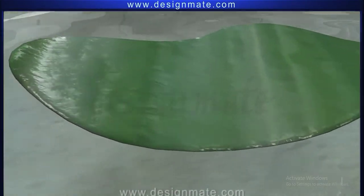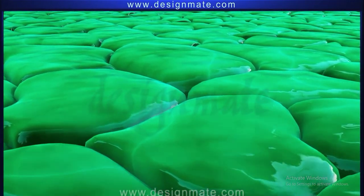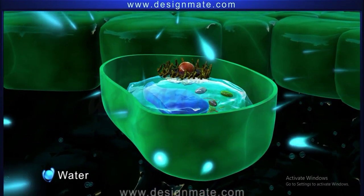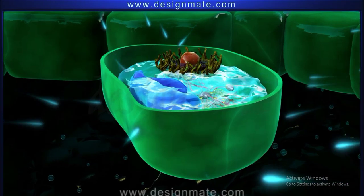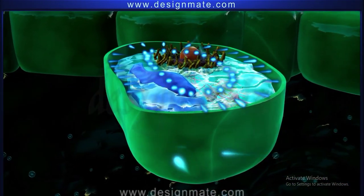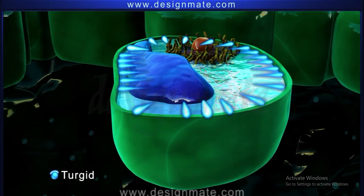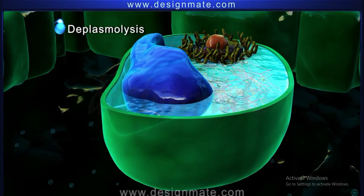On zooming into a single cell, it is observed that molecules of water diffuse from outside the cell across the cell membrane to within the cell. Over a period of time, the vacuole becomes prominent and the cell becomes turgid. The cell as a whole attains its original shape and size. This phenomenon is known as deplasmolysis.